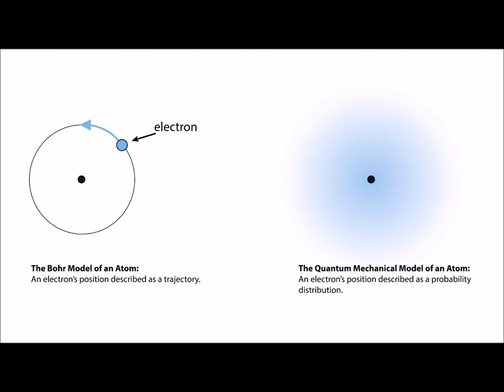In the early 20th century, Niels Bohr proposed his model of the atom. In the Bohr model, electrons circle the nucleus in predictable orbits. Each orbit has a fixed size and energy level.